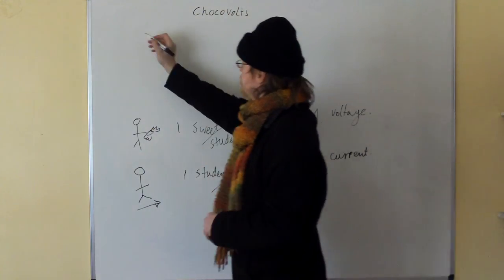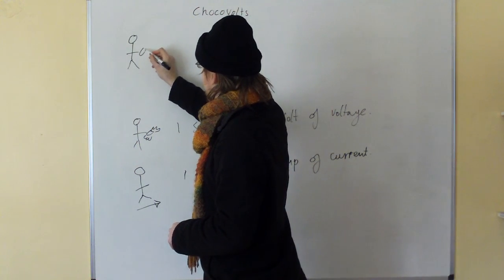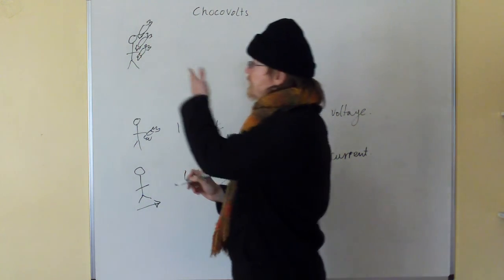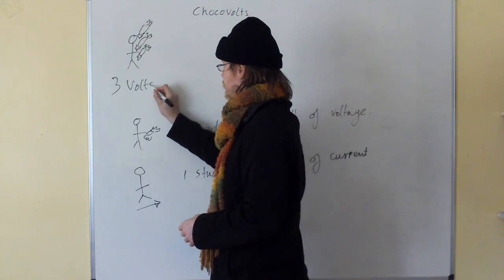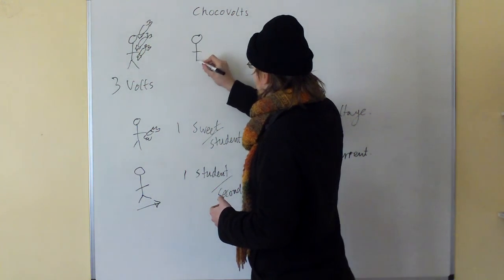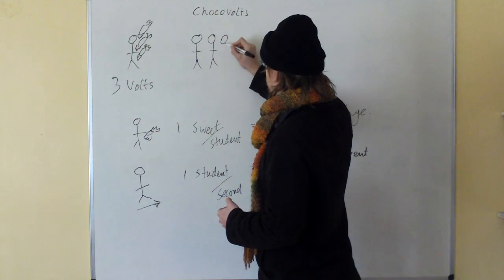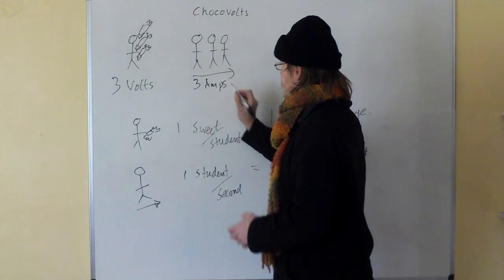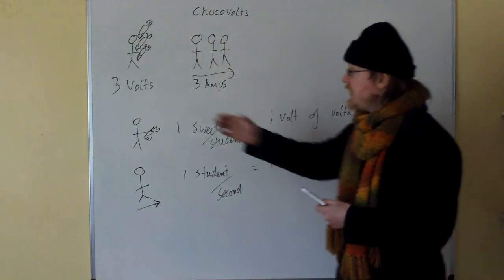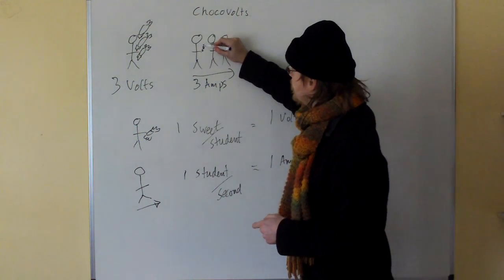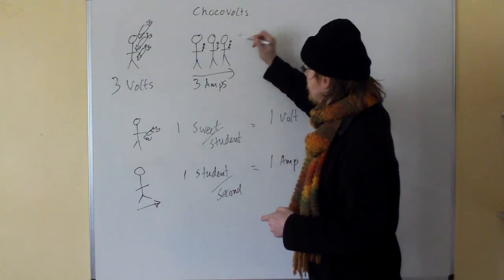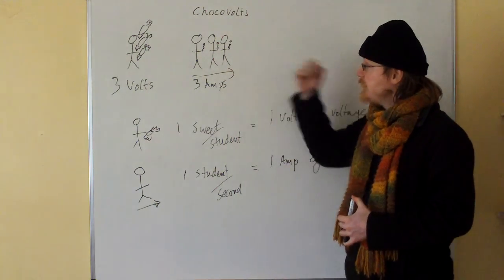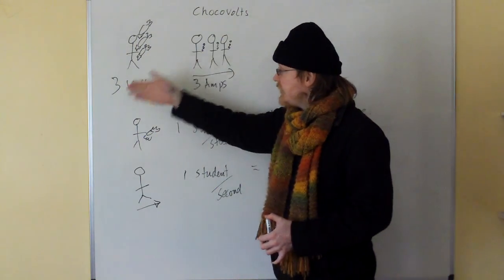Suppose we have this situation. How many volts have we got here? Three volts. Now suppose we have three amps — three students passing every second, and they've each got three volts. We have a current of three amps, three coulombs passing every second, and they've each got three joules of energy — three volts.